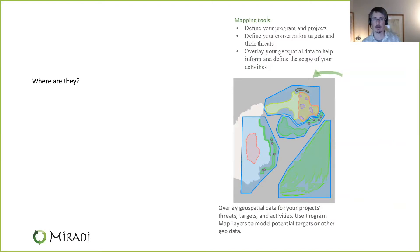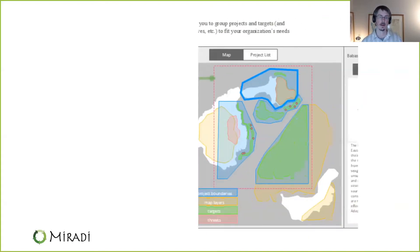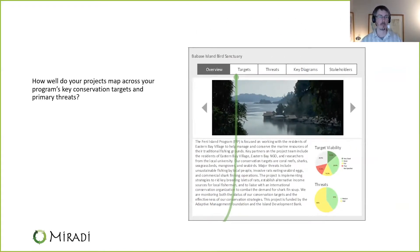We just saw quite a bit of the location question with the geospatial demo. What are the program and project boundaries? What are the factor footprints? What are the program layers that are important to you — for example, the ecological or political boundaries? How well do your projects map across your program's key conservation targets and primary threats? Here we see a narrative discussing how you're addressing targets and threats, with an overview of target viability and threat ratings.